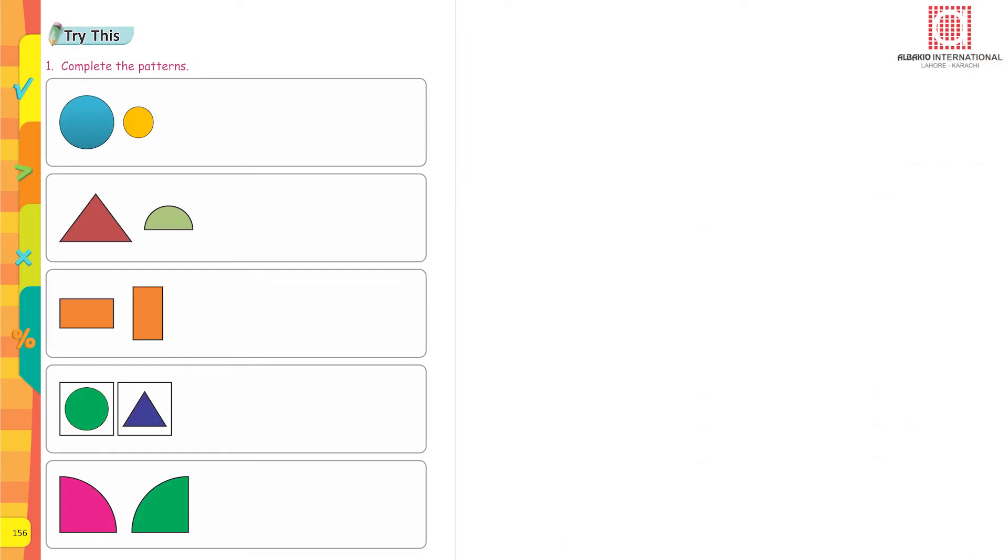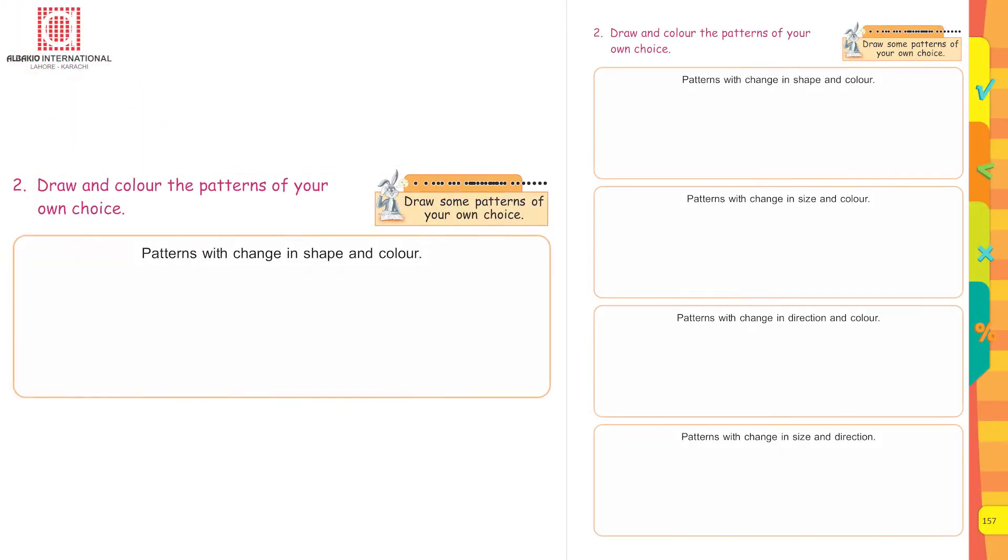Draw the picture that comes next in each pattern. The first one is a bigger circle, the next one is smaller. Now repeat drawing the same pattern. Now I'm sure you can try your hands on the rest of the questions. Draw and color the patterns of your own choice: patterns with change in shape and color.